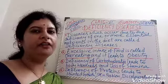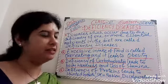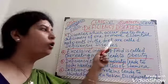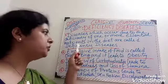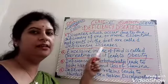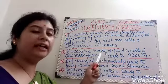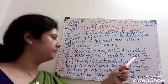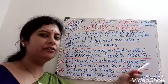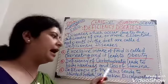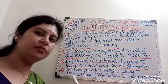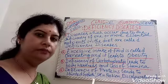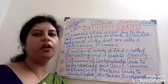The last topic from this chapter is deficiency diseases. Diseases which occur due to the deficiency of one or more essential nutrients in the diet are called deficiency diseases. Excessive intake of food is called overeating and it leads to obesity. Deficiency of carbohydrates leads to body weakness and loss of stamina. Deficiency of proteins leads to stunted growth, skin problems, and discoloration of hair.